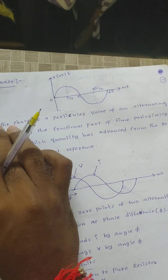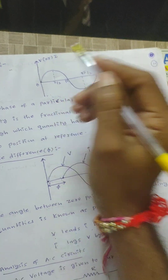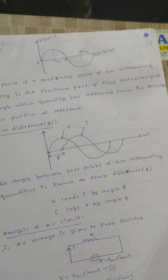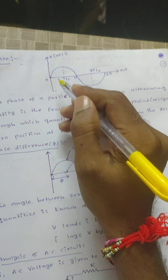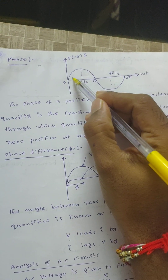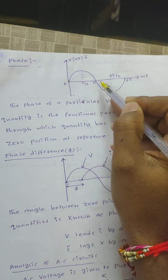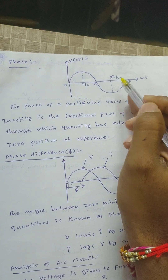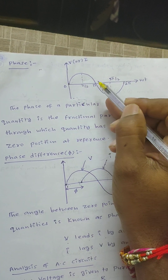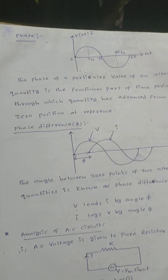Good morning all. Now I am going to explain about phase and phase difference. The phase of an alternating quantity is nothing but the value of voltage or current that starts from either zero position or reference position — this is known as phase.